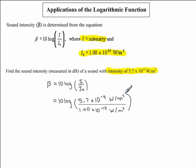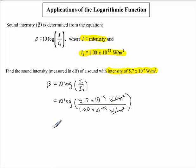Following the rules of BEDMAS, we evaluate what's inside the brackets. The units divide out to 1, so we don't need to consider the watts per meter squared. Dividing 5.7 times 10 to the exponent negative 9 by 1.00 times 10 to the exponent negative 12 gives us 5,700. So our next line is 10 times the logarithmic function of 5,700.